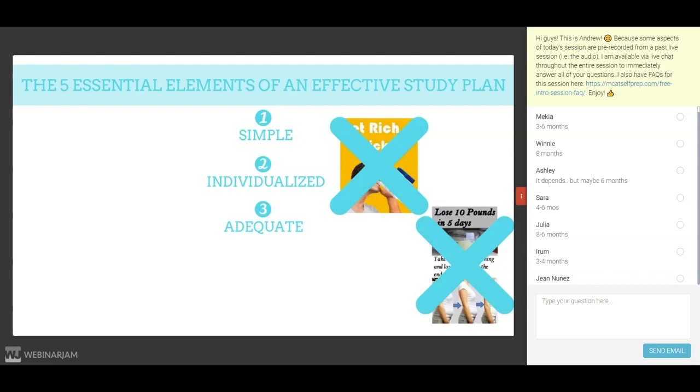This is because three months for one student is completely different than three months for another. For one student, three months might entail 60 hours of full-time MCAT studying per week, while for another, it might include just 10 hours of MCAT studying per week in between classes and work. For this reason, thinking in terms of weeks or months will not give you the best idea in terms of the amount of time you need to invest into this exam.